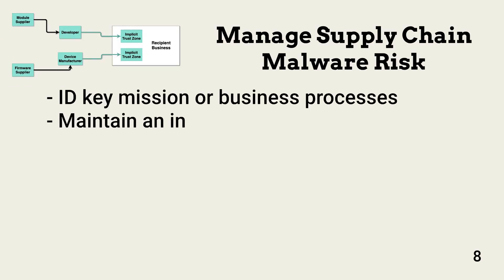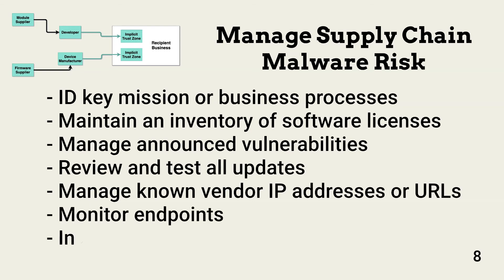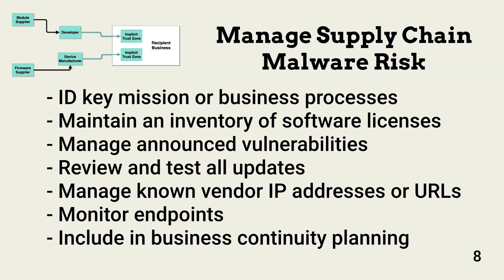In addition to assessing supplier risk, customer organizations must also manage any supply chain malware that might get through. This begins with identifying critical mission or business processes and the trust zones supporting them. An up-to-date inventory is also needed to understand what applications are installed and may be receiving automatic or user-controlled updates, and it's important to know where those applications reside. Organizations must also perform daily reviews of announced vulnerabilities or malware that may have entered the supply chain, and this kind of incident must be included in incident response planning and training.